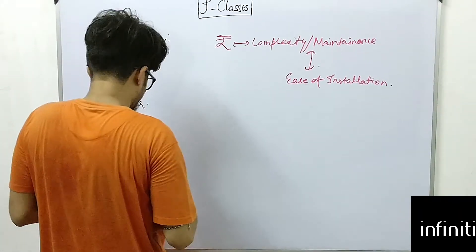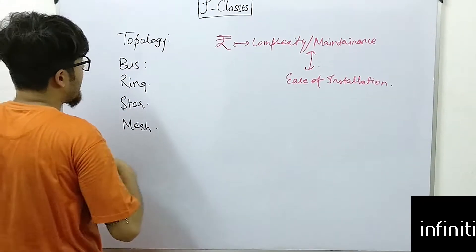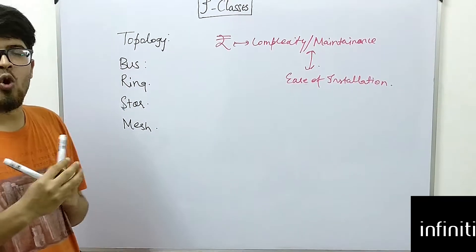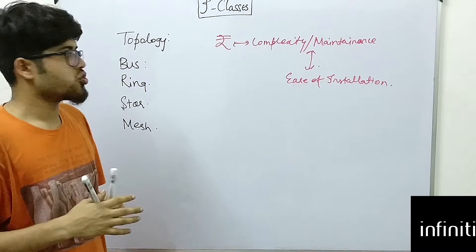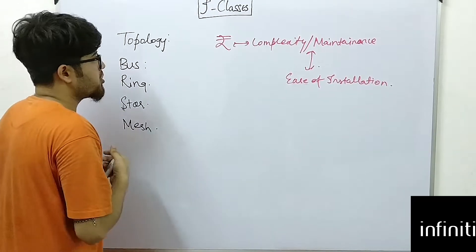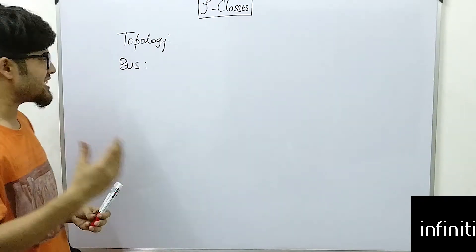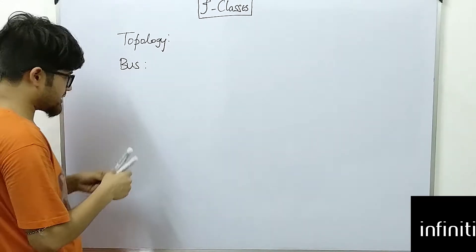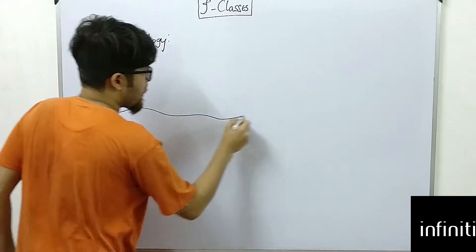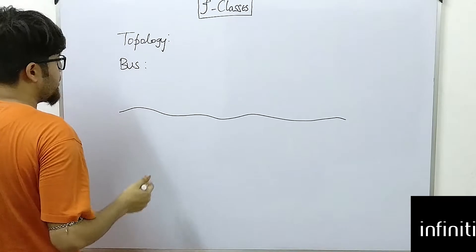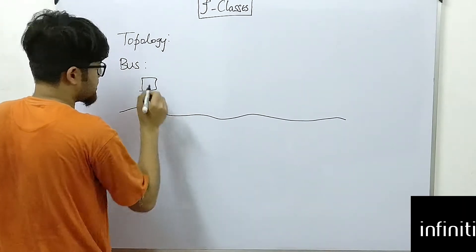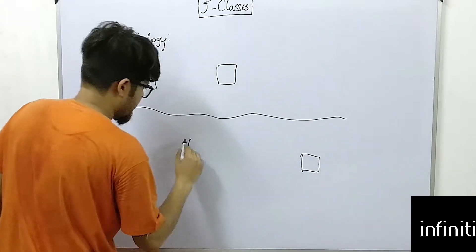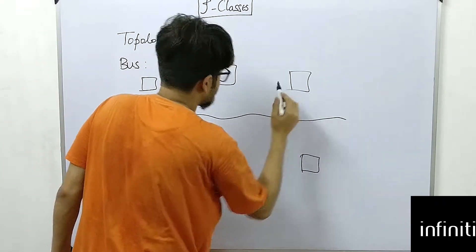We are going to start with bus topology. In bus topology, we have a single frame or single skeleton, and all the nodes are connected to that. There will be one single media — consider a wire — and we place different nodes along this wire.